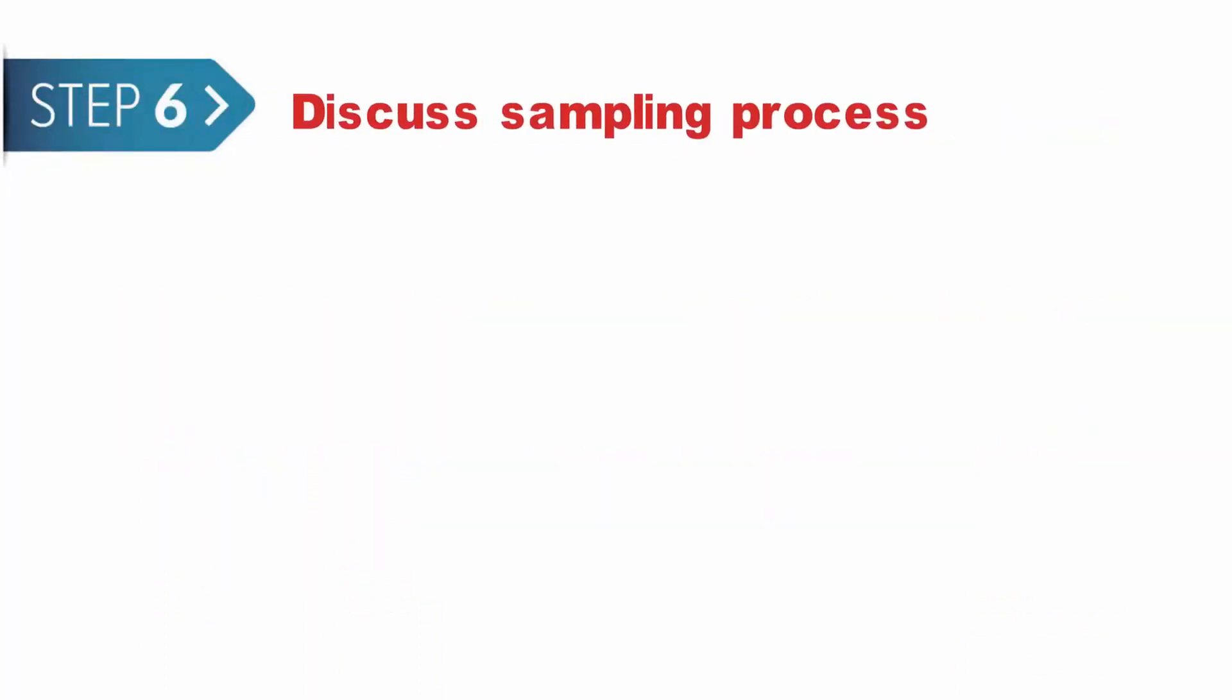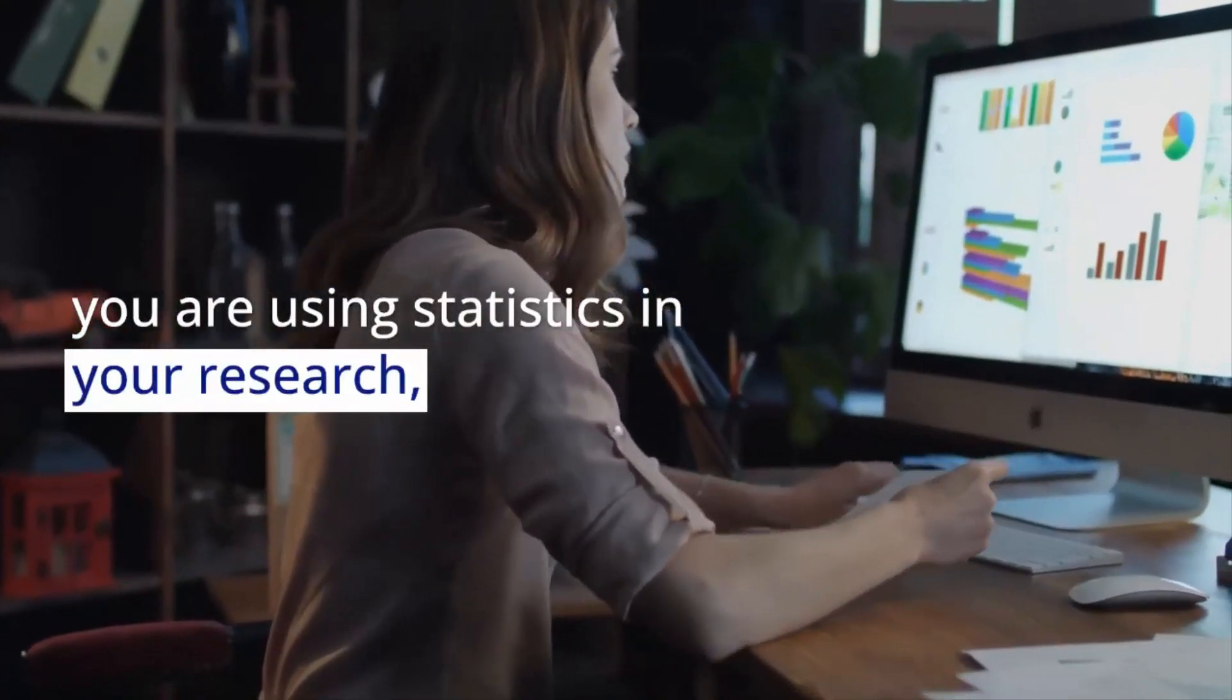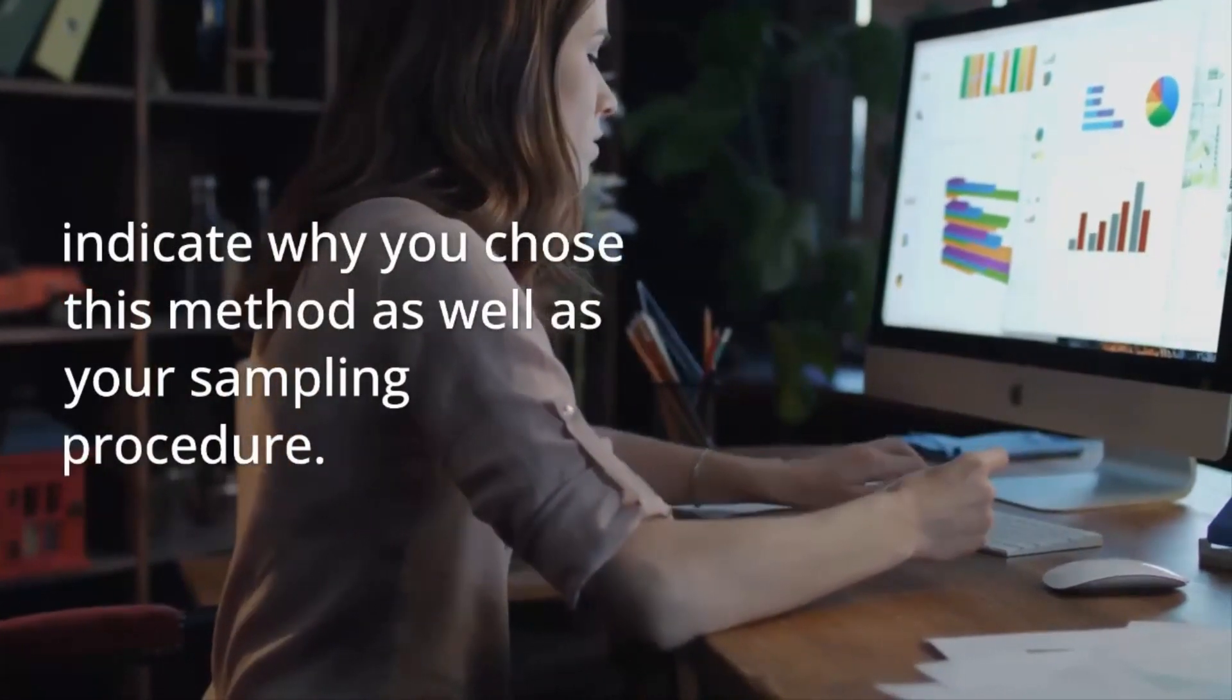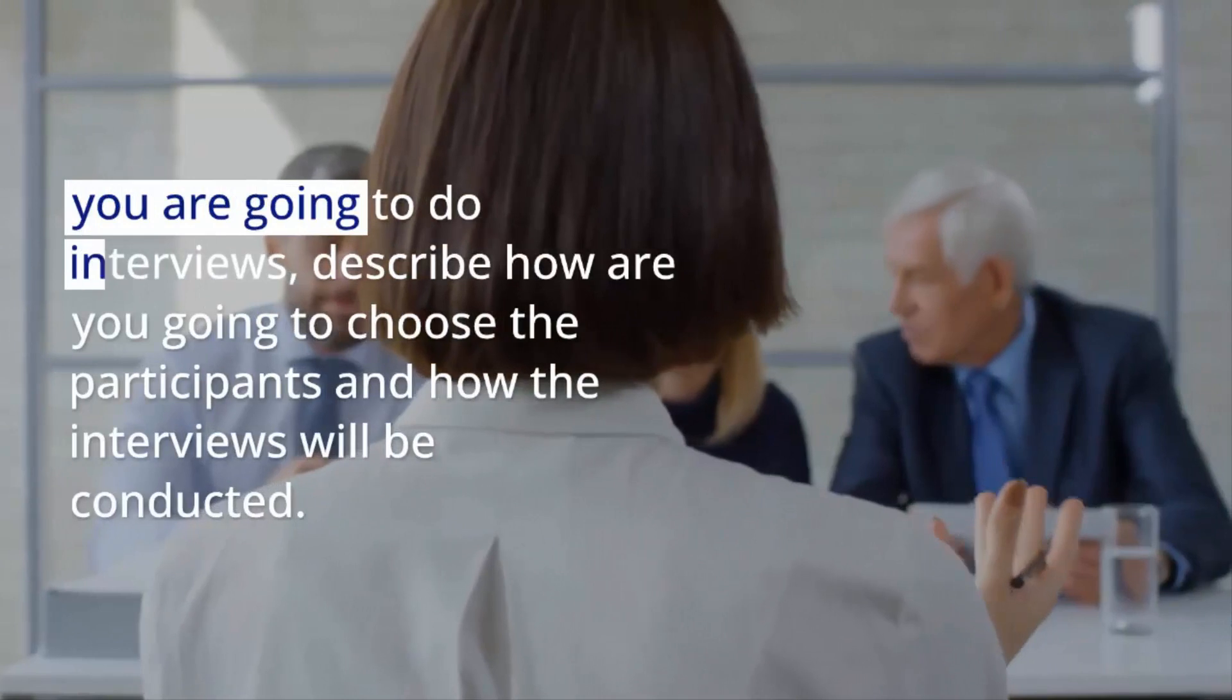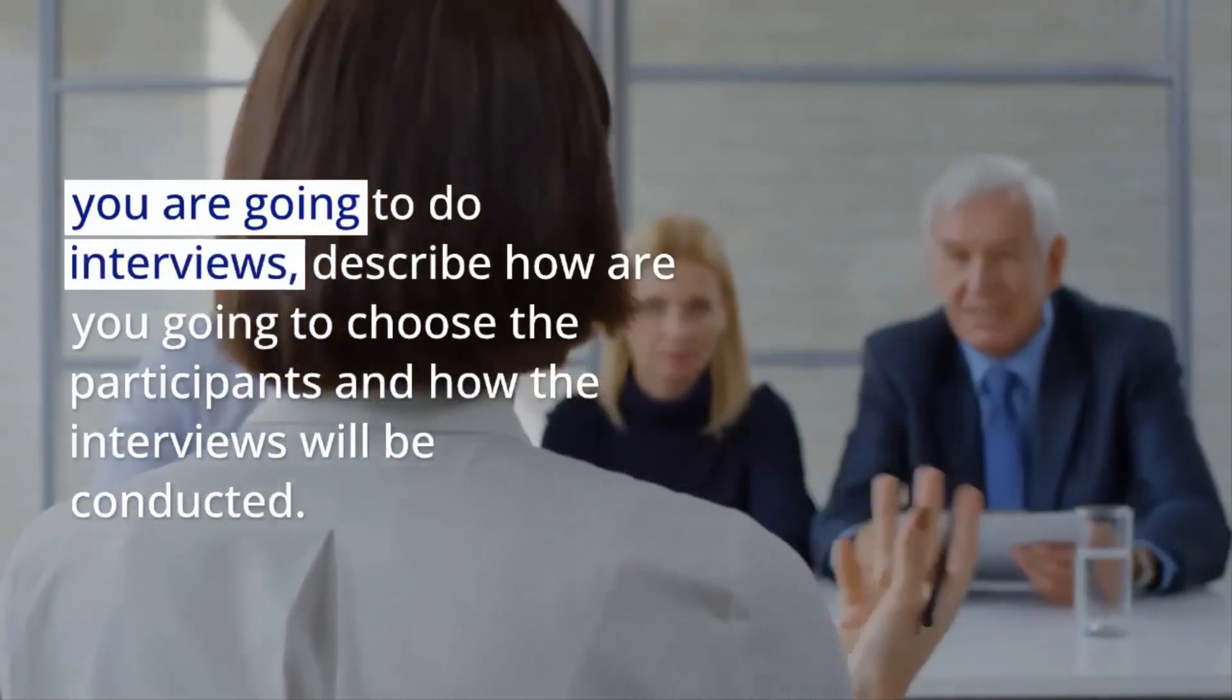Step 6: Discuss sampling process. Explain the reason behind your sampling procedure. For example, if you are using statistics in your research, indicate why you chose this method as well as your sampling procedure. If you are going to do interviews, describe how you are going to choose the participants and how the interviews will be conducted.